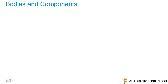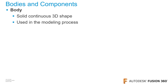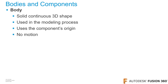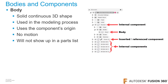A body is a solid continuous 3D shape. For example, if you had a box and split it into two, you would have two bodies. Bodies can be used in the modeling process and use the component's origin. Bodies cannot be used for motion — you cannot apply assembly joints or use them in animations. They will not show up in a parts list, and in the browser, bodies appear in a bodies folder.